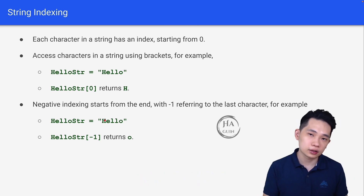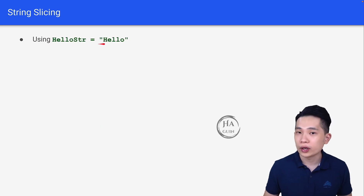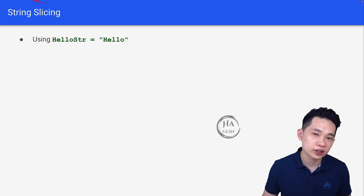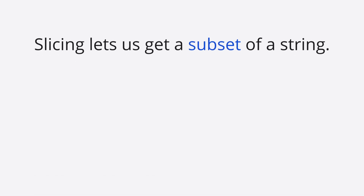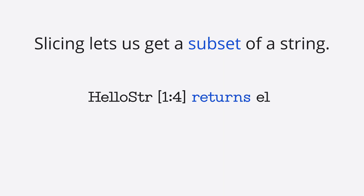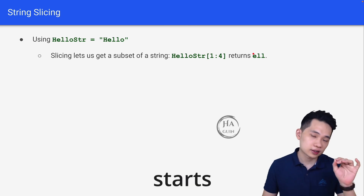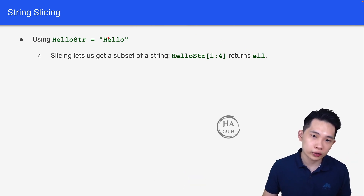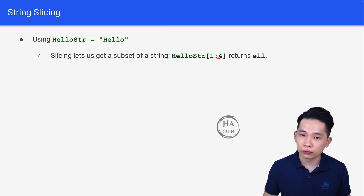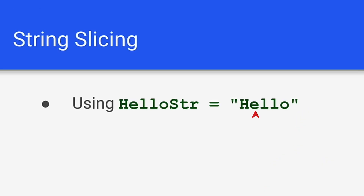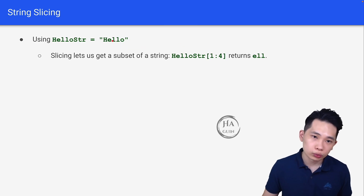We also have string slicing. For example, with hello_string = "Hello", slicing lets us get a subset of a string. hello_string[1:4] returns 'ell'. The index starts from zero, so indices one, two, three, four — we take indices one, two, three, excluding four. So the answer is 'ell'.